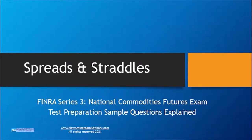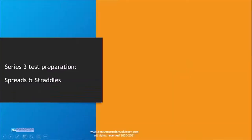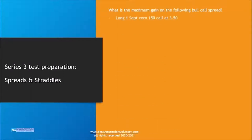Next, we'll look at spreads and straddles — two very common strategies in the futures and options markets that come up very often on the test. The question focuses on a bull call spread: what is the maximum gain on the following bull call spread? The spread is long a September 150 corn call at a certain price, and short a 165 call at a different price, and we're given several possible maximum gain amounts to choose from.